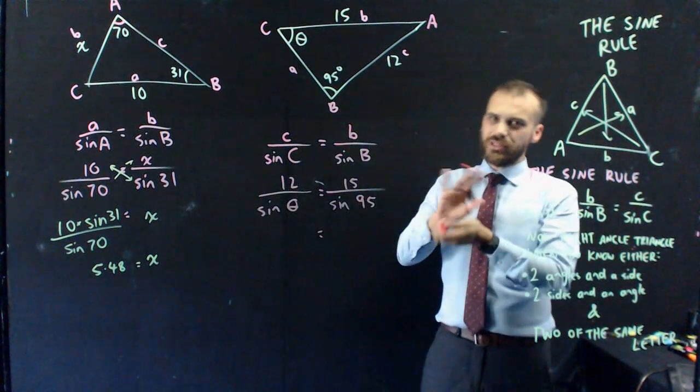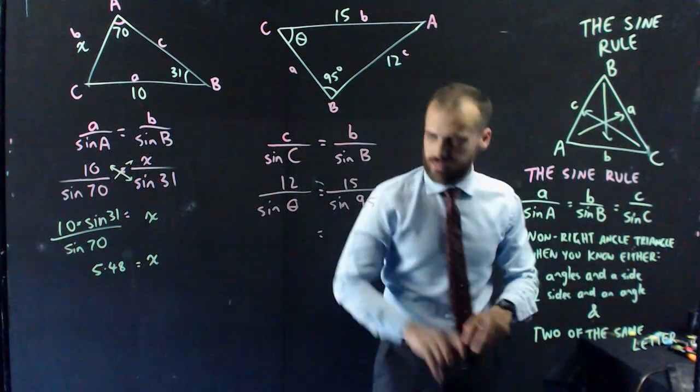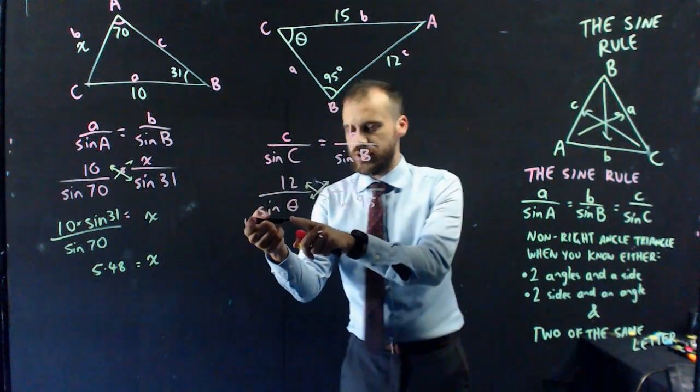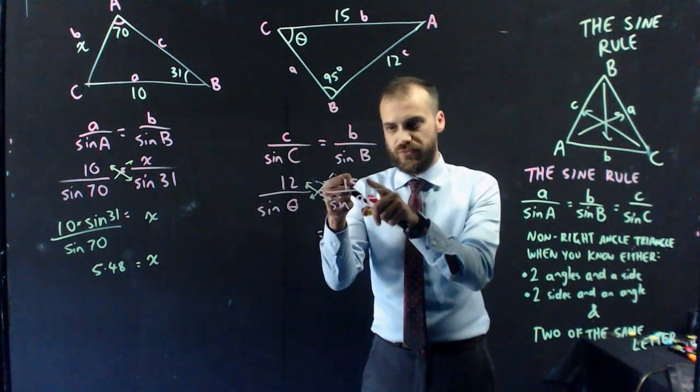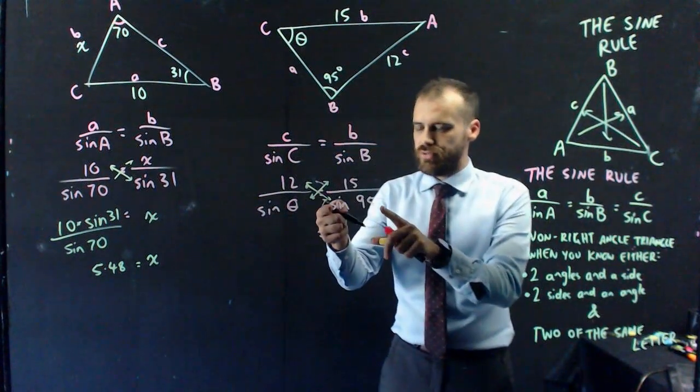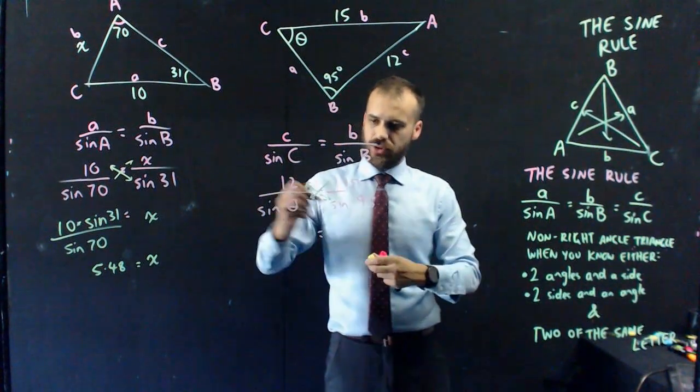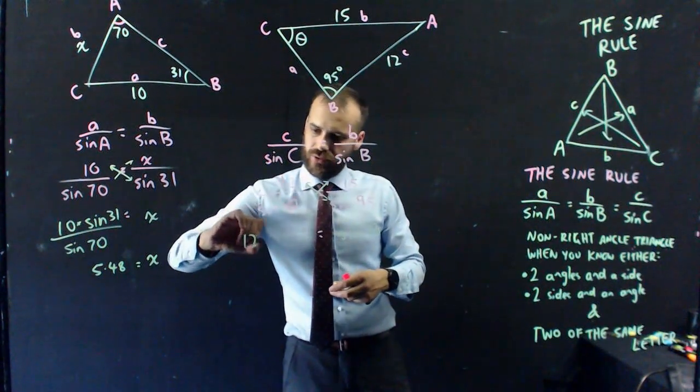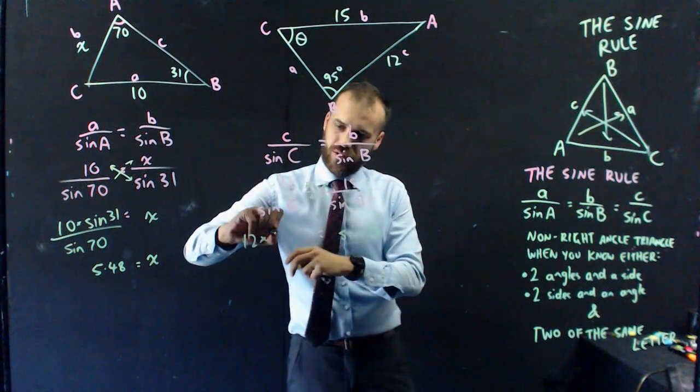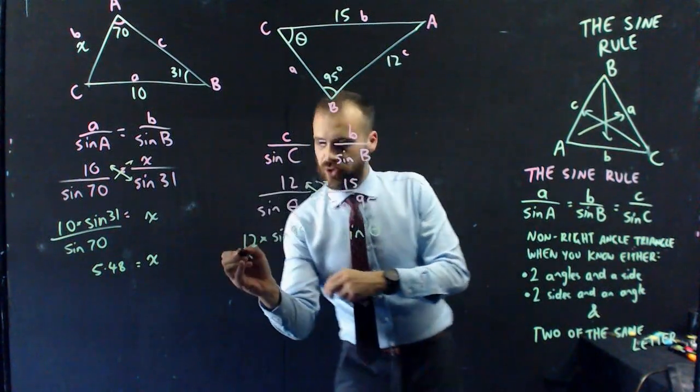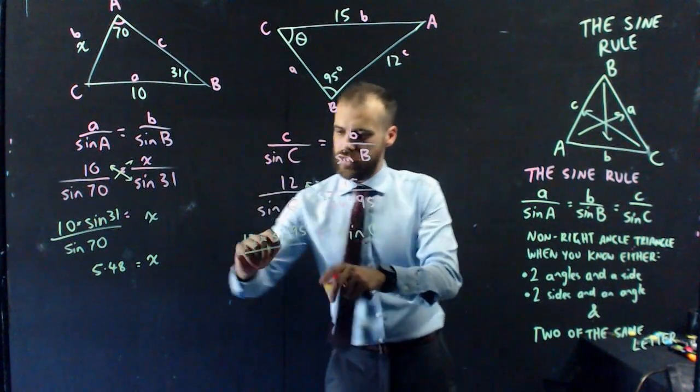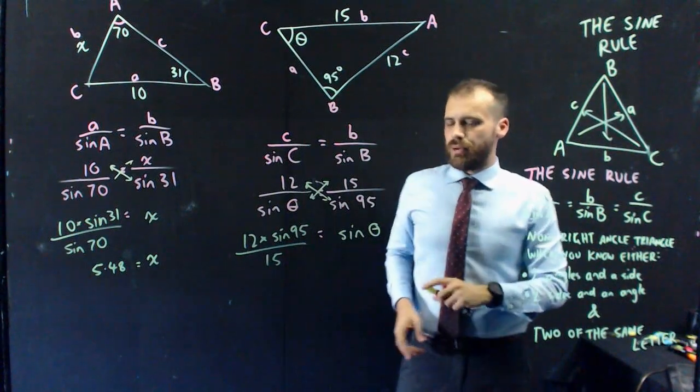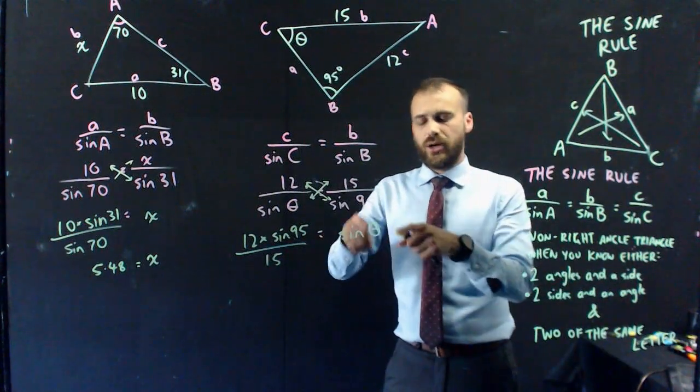Now it's just a little more complicated here. It's still cross multiplication. I'm going to move the sine theta up to here. I'm going to move the 15 down to there. I'm going to move the sine 95 up to there. Let's take a look at what that looks like. Sine theta over here, 12 times sine 95 up to here, divided by the 15 down to the bottom. That looks pretty good, but I don't want to know sine theta. I want to know theta.